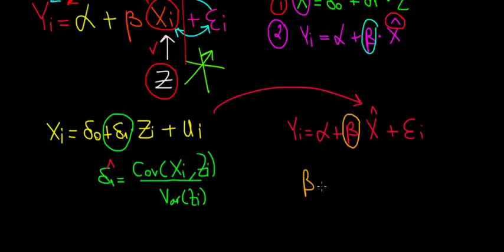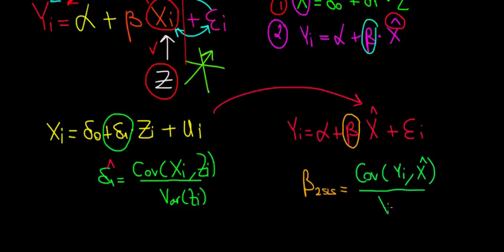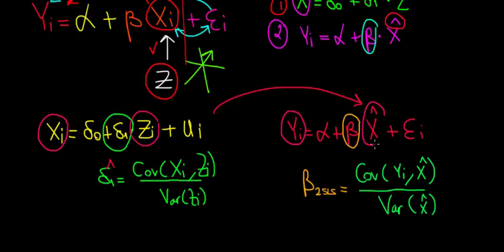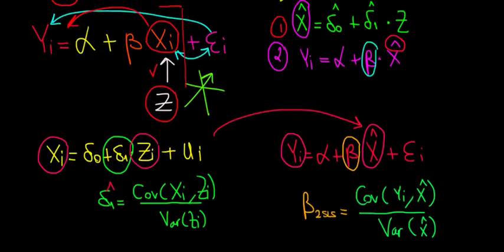What we're trying to prove is that this slope coefficient β is the same as in the previous video — namely, the ratio of covariances. The β under the two-step least squares model is the covariance between the dependent variable y and the regressed independent variable x̂, relative to the variance of x̂. Notice the analogy: it's the covariance between the dependent variable and the independent variable, divided by the variance of that independent variable. From here, we're going to expand x̂ by substituting what we regressed in step one.